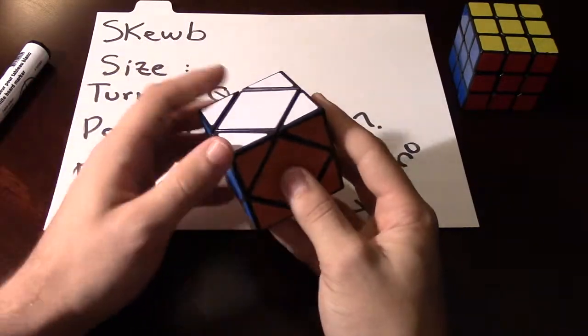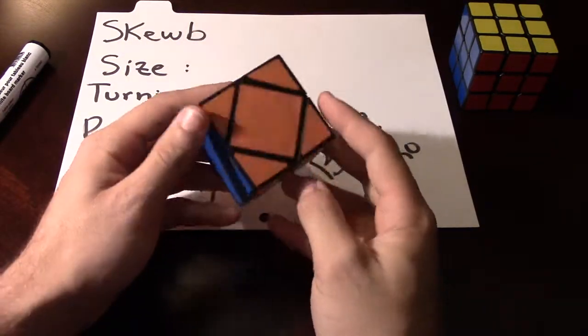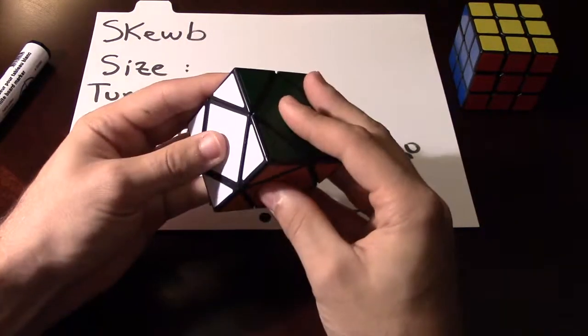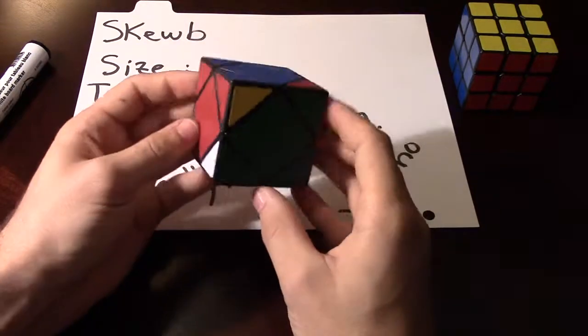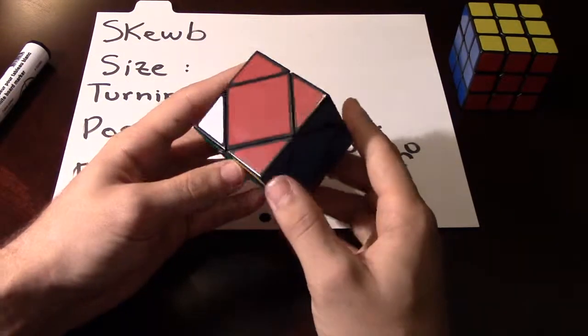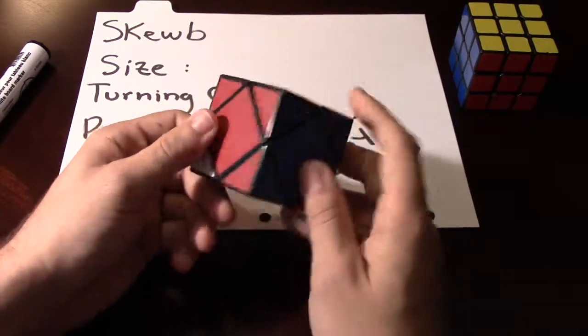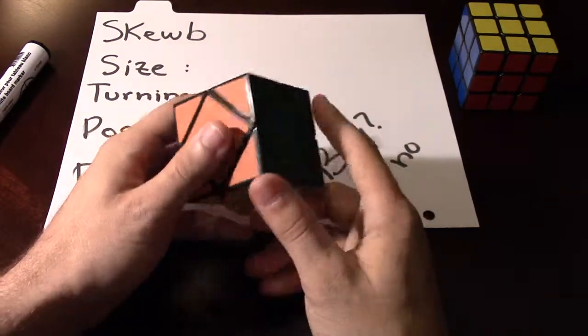But thankfully, this is not how you mix it up. You have to take two corners, or two halves of the cube, and just twist them from each other, just like this. This is how you mix it up. You just keep going until you think it's mixed up enough for you to solve it.